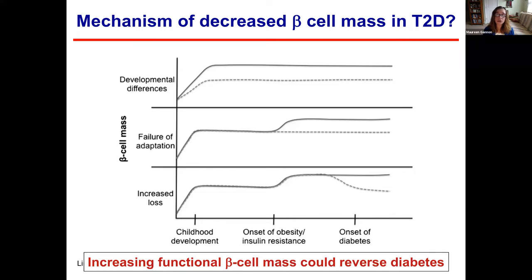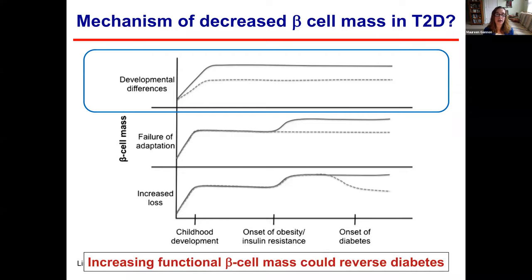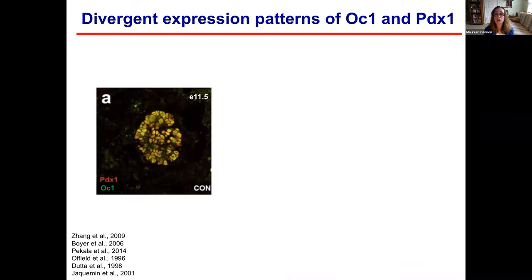Regardless of the etiology, the endpoint is the same — a decrease in beta cell mass in individuals who have type 2 diabetes. One of the things we and many other labs are interested in is whether increasing functional beta cell mass could prevent or reverse diabetes. I'm going to talk about two different projects: the first involves potential developmental biology issues that could lead to a decrease in functional beta cell mass in some individuals.